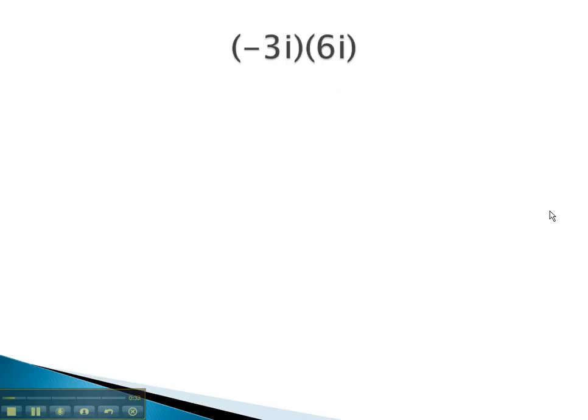Let's take a look at some examples. In this problem, we're multiplying this together. If this was negative 3x times 6x, we would multiply the numbers and then the variables. Let's do that. Negative 3 times 6 is negative 18, and i times i is i squared.